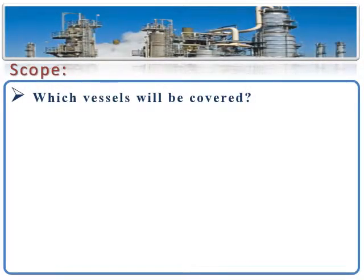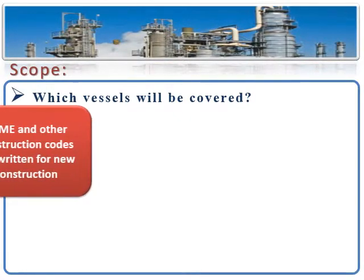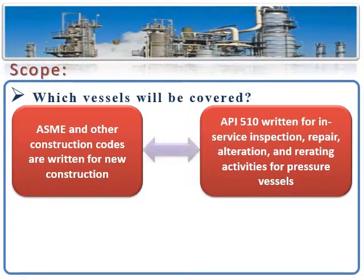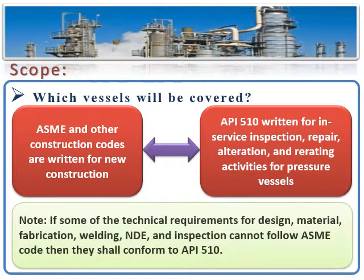We will find that ASME and other construction codes were written for new construction, while API 510 was written for in-service activities. So why do we include ASME code in this course? The reason is that most of the technical requirements for design, welding, non-destructive examination, and materials can be applied to the inspection, rating, repair, and alteration of in-service pressure vessels. And finally, if some of the technical requirements for design, material, fabrication, welding, non-destructive examination, and inspection cannot follow ASME code, then they shall conform to API 510 requirements.